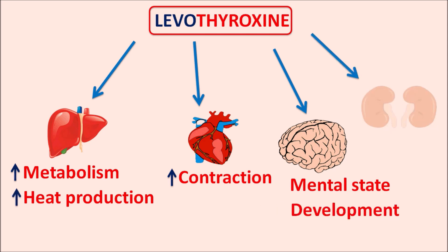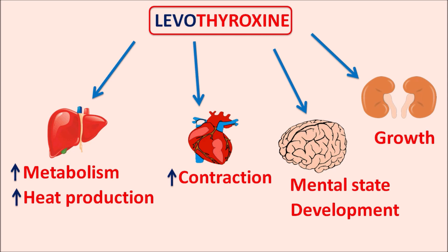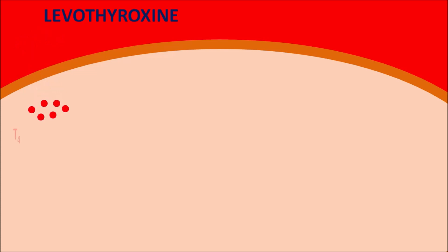Levothyroxine can also increase the growth of the renal system. All these actions are mediated through various proteins and mediators. Levothyroxine enters cells in the T4 form, but is converted into its active form T3 within the cytoplasm by deiodinase enzymes, which remove one iodine atom so that T4 is converted to T3.